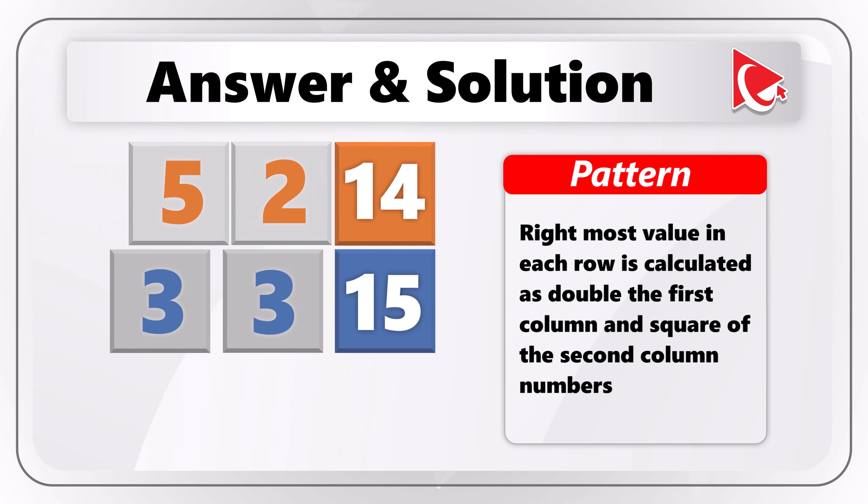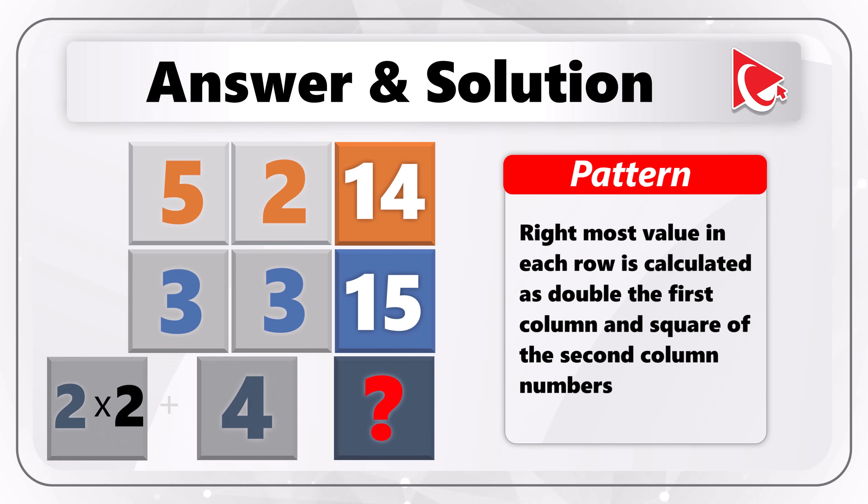For the second row, the calculations will be 3 multiplied by 2 plus 3 squared, which would equal 6 plus 9, and the end result of this would be 15. So for the missing value, the calculations will be 2 multiplied by 2 plus 4 squared, which would equal 4 plus 16, and the end result of this would be 20.